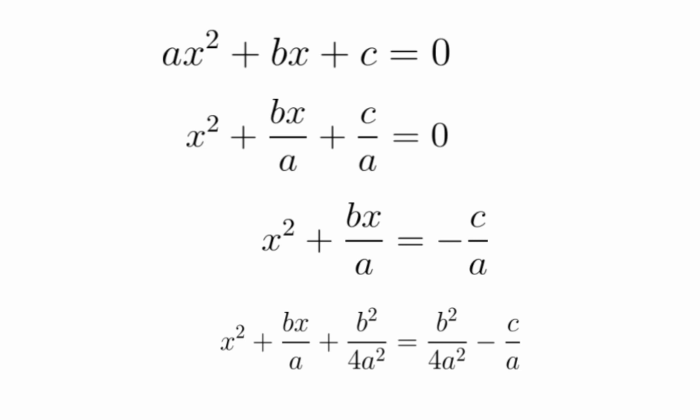And we'll square that to get the y squared term, which we just add b squared over 4a squared to both sides, which is y squared. And now, the whole left side is a perfect square.